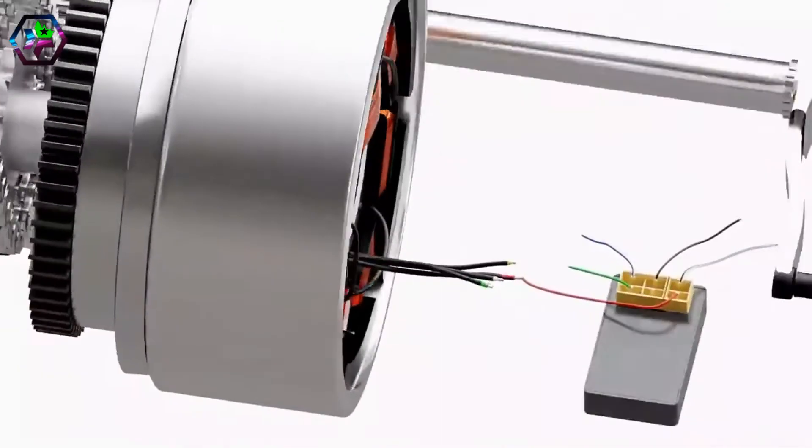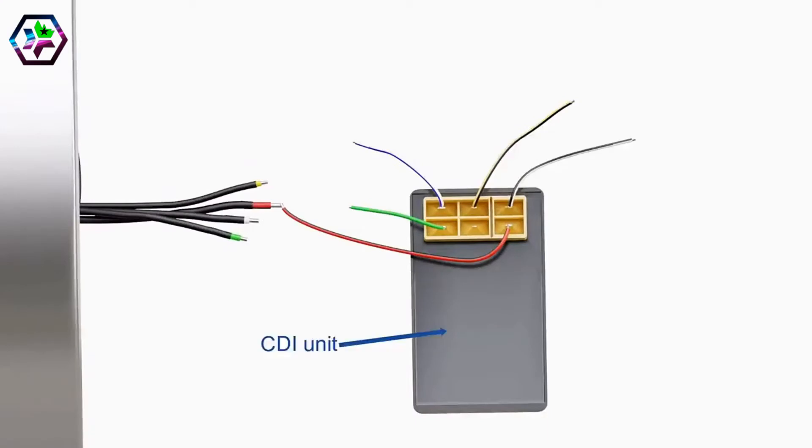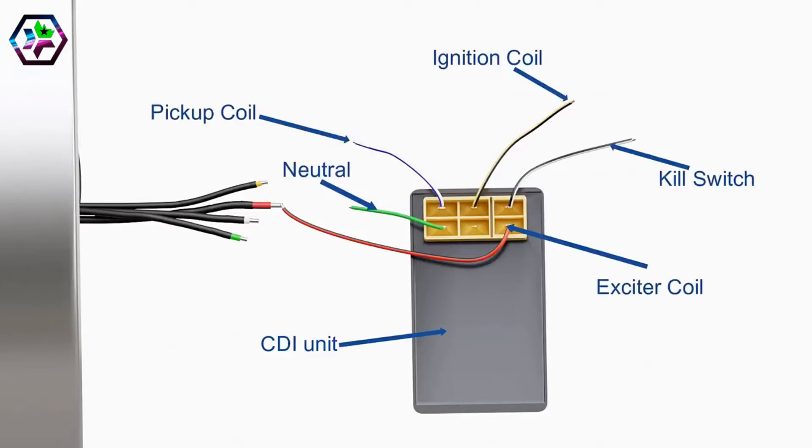This voltage is supplied to an electrical component known as the capacitive discharge ignition, or CDI unit. The connection for an AC-CDI is shown here. The primary function of the CDI unit is to store electric charge and dump the stored charge when required.